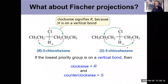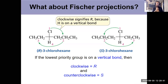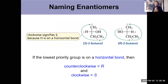For Fischer projections, we're still looking at priorities going from one to two to three. Whereas in a perspective formula we needed priority four in the dashed position, here we need priority four to be on a vertical bond. In that case, clockwise is R and counterclockwise is S. But if priority four is on one of the horizontal bonds, then they flip. That's really the beauty of Fischer projections — they make it very easy to assign things as R or S.